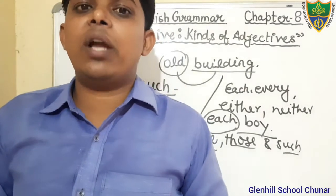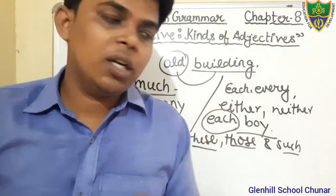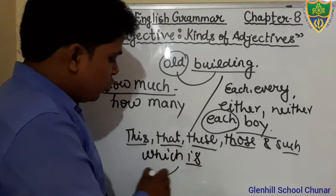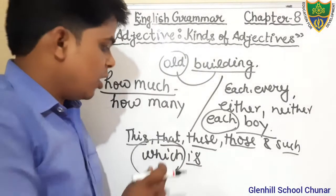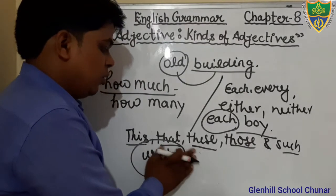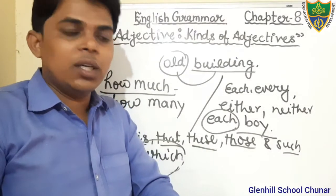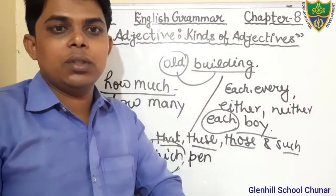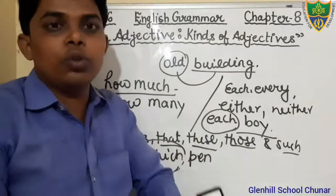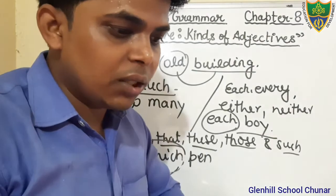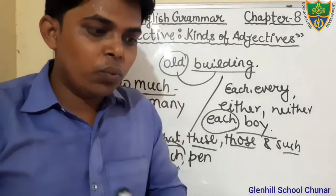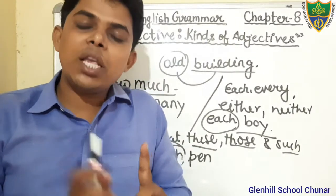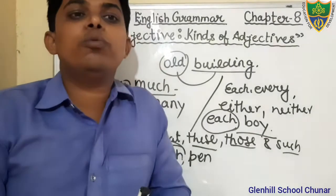For example: 'Which book do you like?' or 'Which pen do you like?' Dear students, if we are using the words which, whose, how many, or what with a noun to ask a question, then that would be Interrogative Adjective. When we use these words to ask a question with a noun, then that is the Interrogative Adjective.